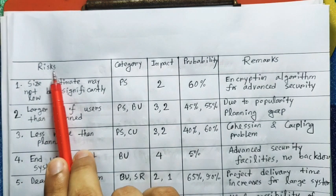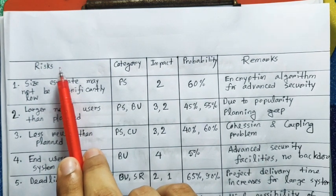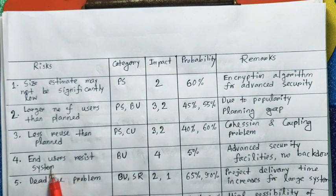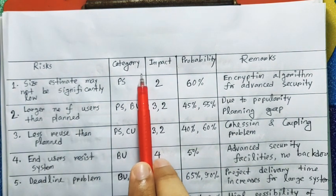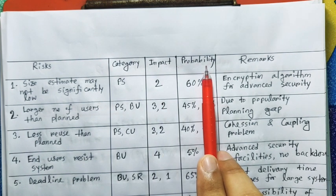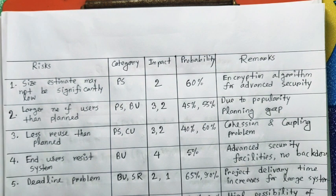Now, the risk table is generated by the table. The first thing is the risk name, which is the category. The impact value is shown, the probability value is shown, and the last factor is the remarks column. So, if you consider this first tutorial, we will see the risk identification factor.